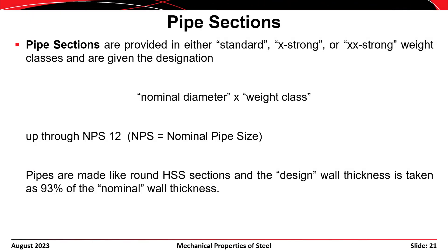Pipe sections are occasionally used in structures. They're available in three grades—standard, extra strong, and double extra strong—which are basically the weight classes for the pipes. The designation uses a nominal diameter and weight class, available up through 12-inch diameter. Like HSS members, pipes are rolled with wall thicknesses that are actually 93% of the nominal. While pipes and HSS sections can share similar dimensions, an HSS is fundamentally a better steel with better tolerances, making it preferable in most structural applications.